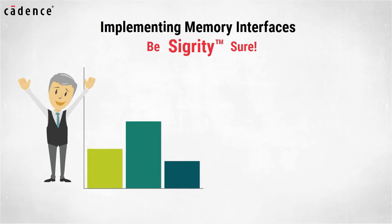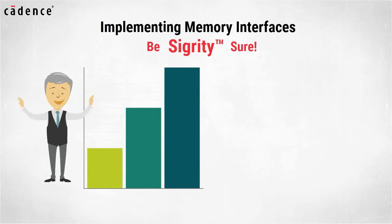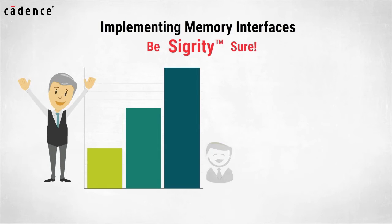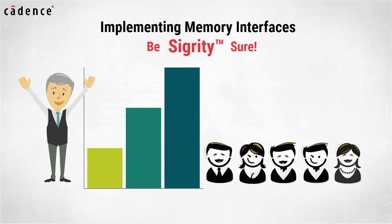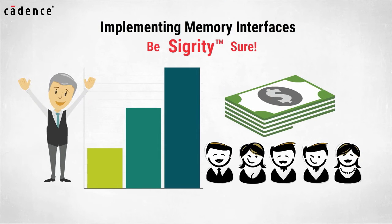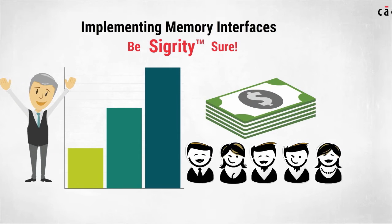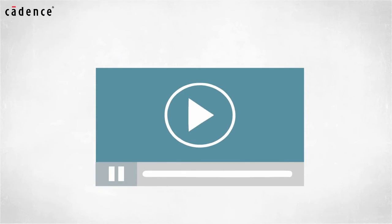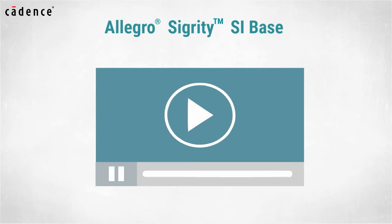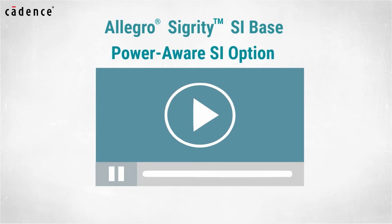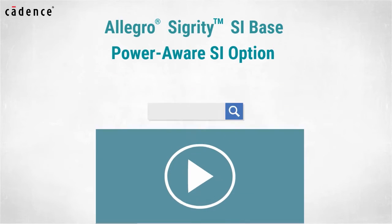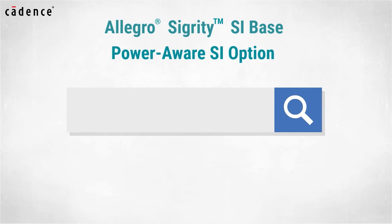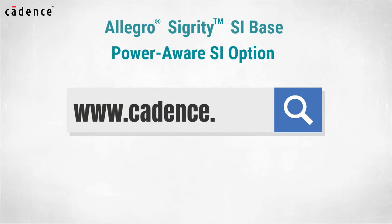This helps reduce design re-spins and gets product to market on time. The results may be higher market share, and who knows, maybe even a nice end-of-the-year bonus for your product development team. In today's video, you will see us utilize the Allegro Sigrity SI Base and PowerAware SI Option. To learn more about these products, visit us at www.cadence.com.